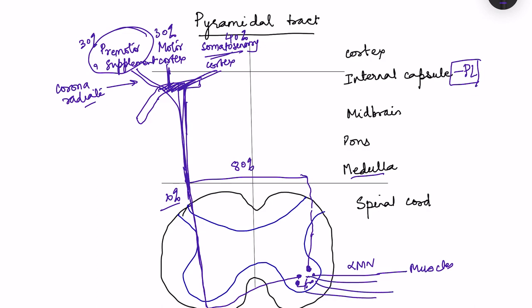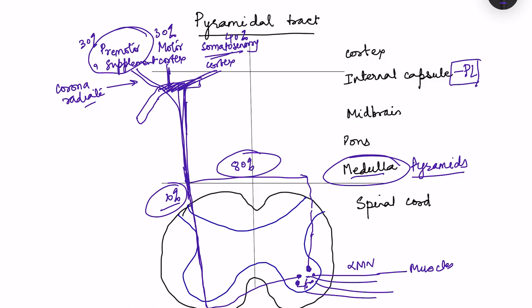To summarize the pyramidal tract course: origin from three cortical areas, convergence into the corona radiata, passage through the posterior limb of the internal capsule, descent through the brain stem, 80% of fibers crossing in the medulla with 20% descending uncrossed and crossing later in the spinal cord, and synapse with alpha motor neurons or interneurons. The tract is named 'pyramidal' because in the medulla it forms a structure known as the pyramids.